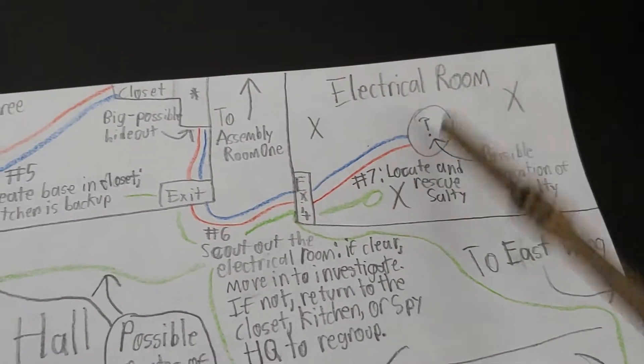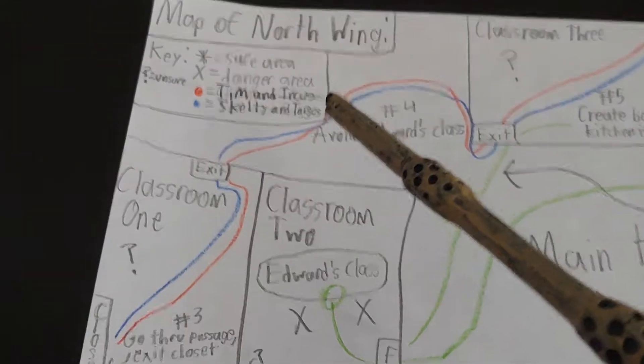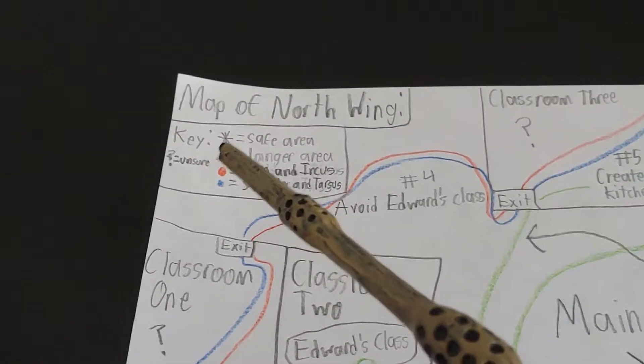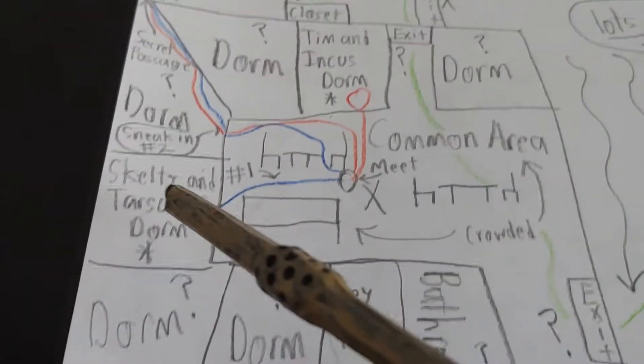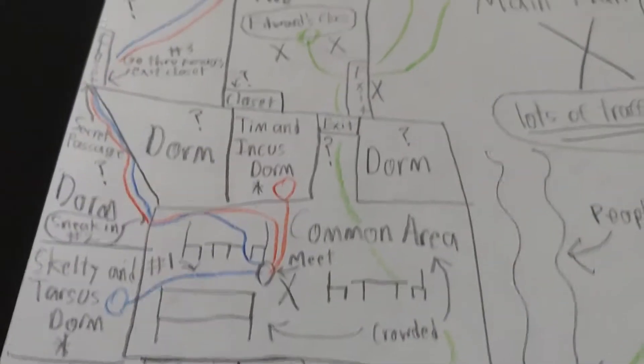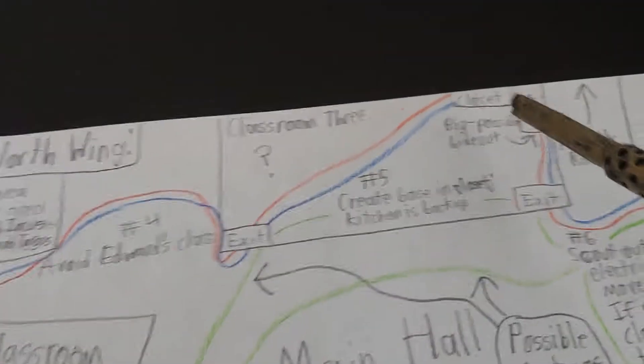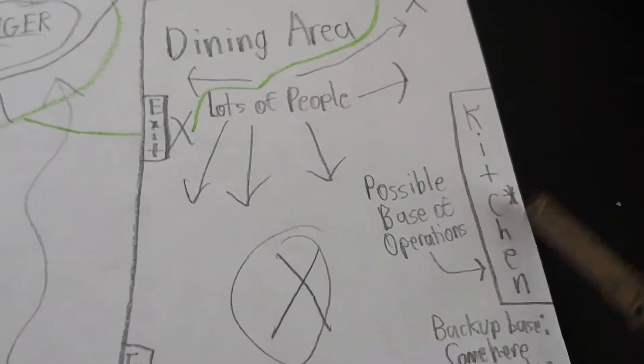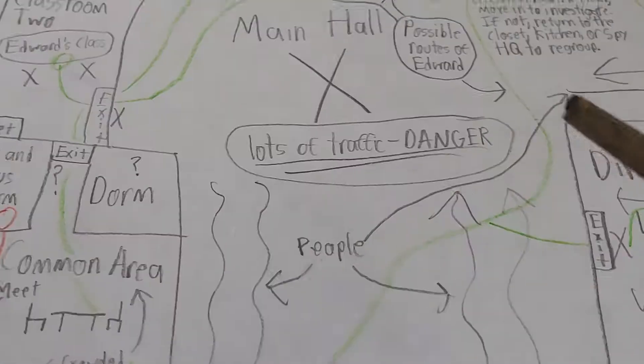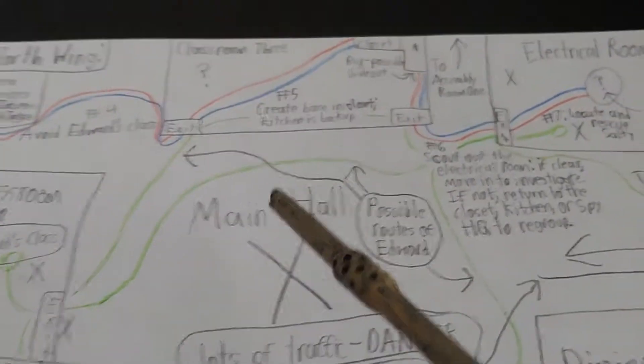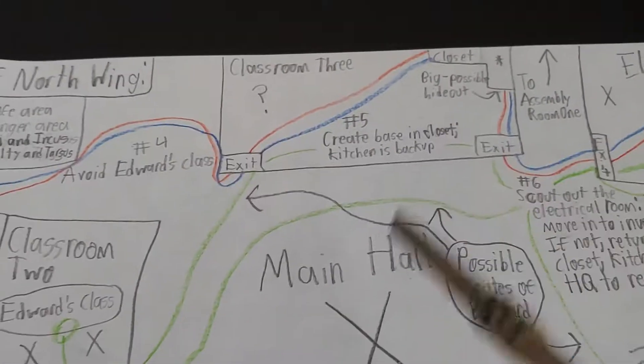Now if we look at this key, an asterisk stands for a safe area. For example, Tim and Incus's dorm, Tarsus and I's dorm, spy HQ, this big closet right here which is a possible hideout, and the possible hideout base of operations in the kitchen are all safe areas because we know who's going to be in there when and what exactly is going to go on.